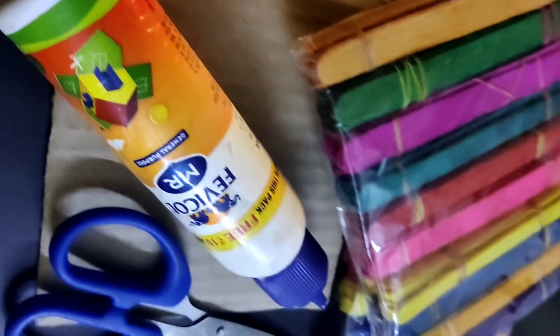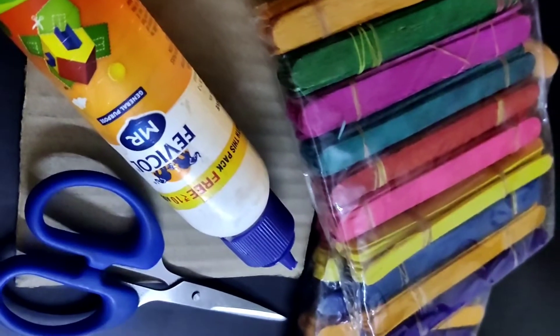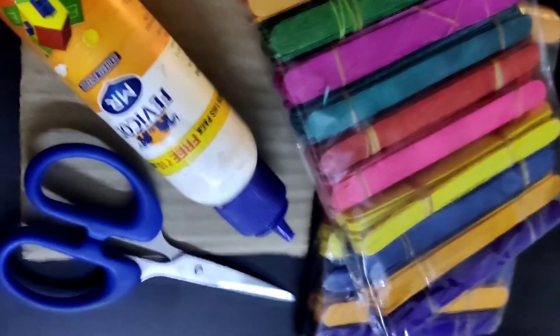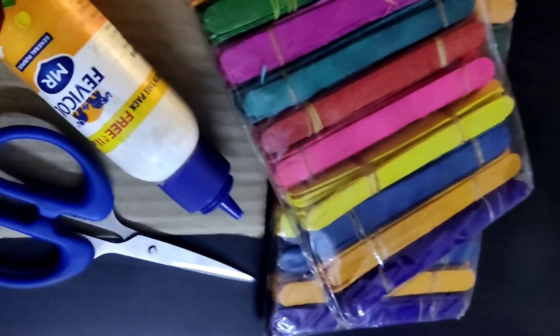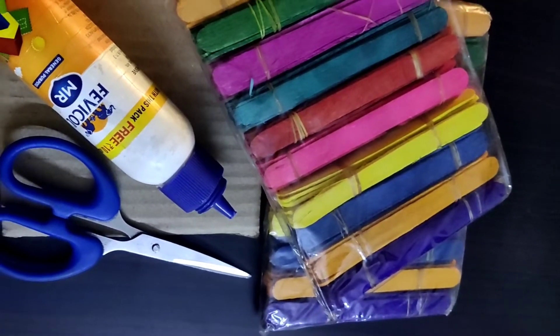Today we will make a pen stand with colorful ice cream sticks and for that we just need simple materials such as ice cream sticks, scissors, fabric glue, and a small piece of cardboard.